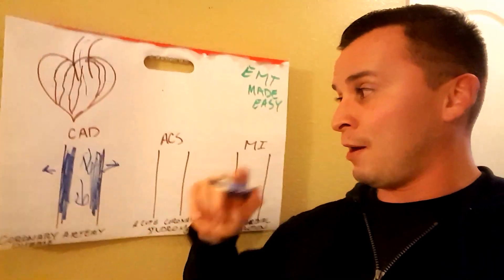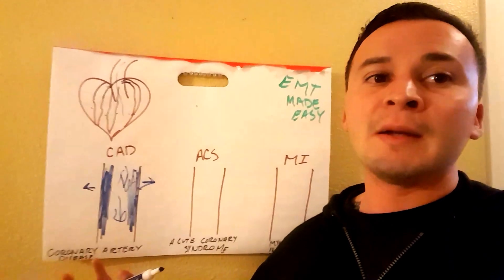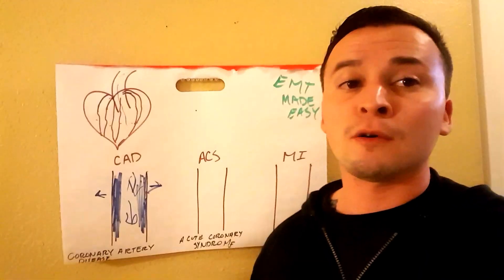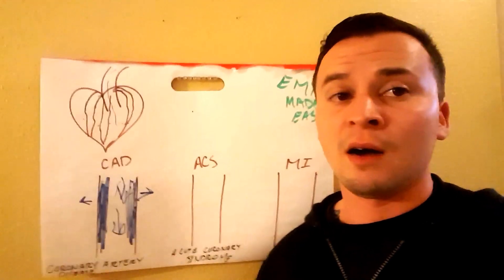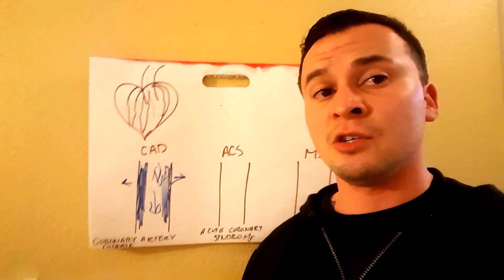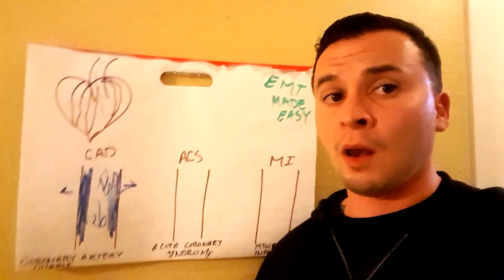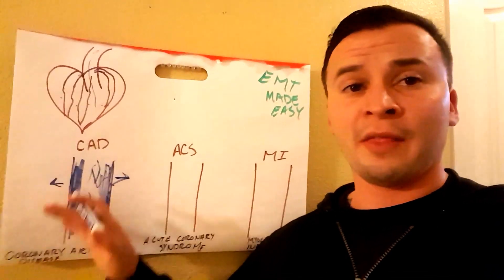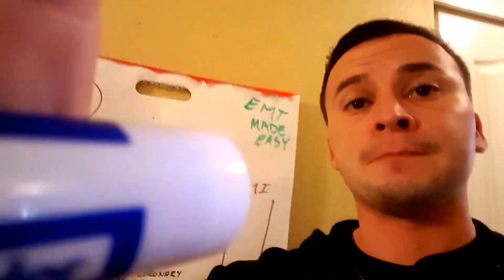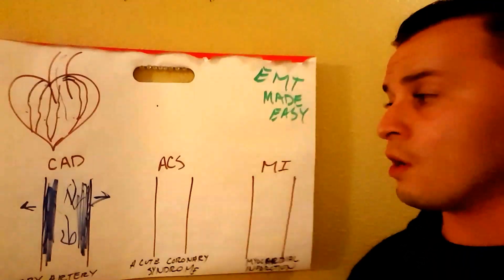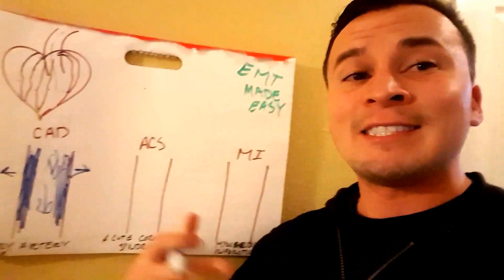Coronary artery disease with stable angina is not immediately life-threatening — it's unpleasant, but many people live with it. Changing your diet and habits may help long-term, but once plaque is there, it's very hard to get rid of.